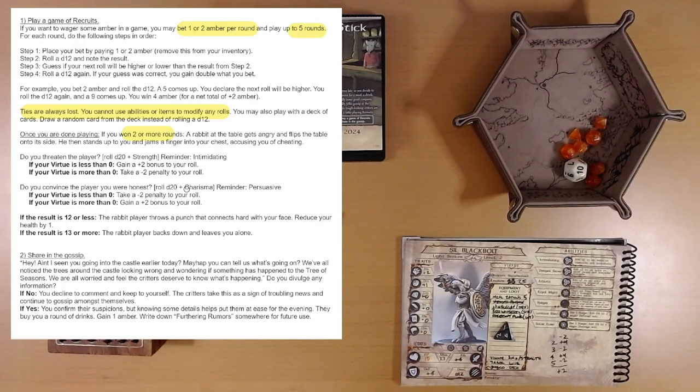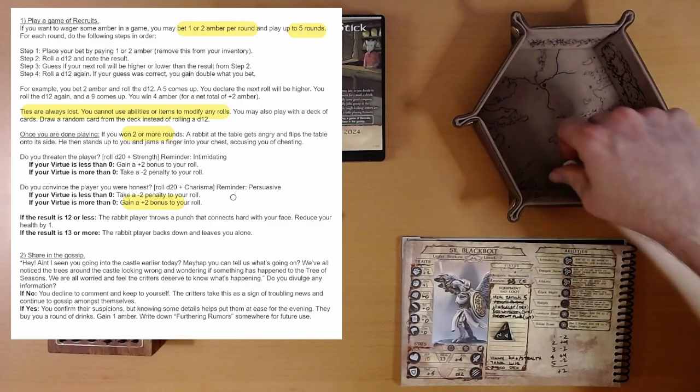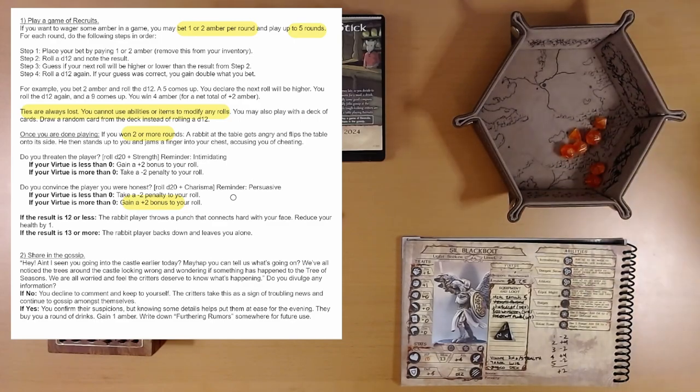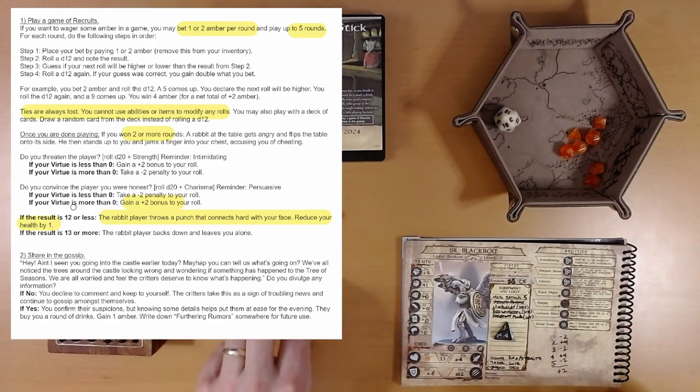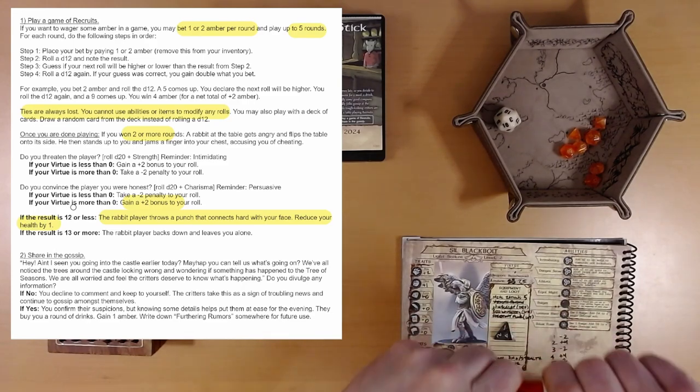Ivy steps in front of Vinny here and tries to calm down the rabbit. We've got a d20 plus charisma is zero, but our virtue is more than zero. So we get a plus two on this persuasion roll through five. Oh, that's terrible. The rabbit player throws a punch that connects hard with your face. Reduce your health by one. Okay.